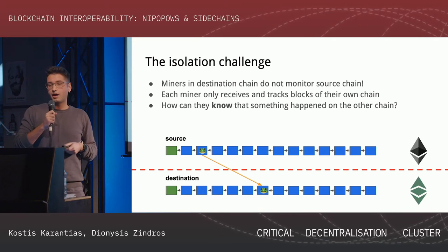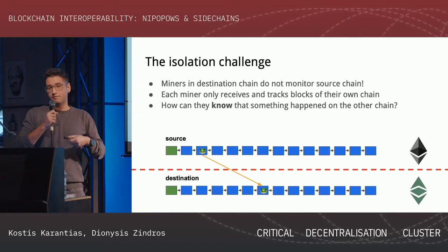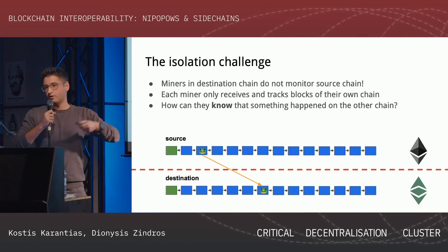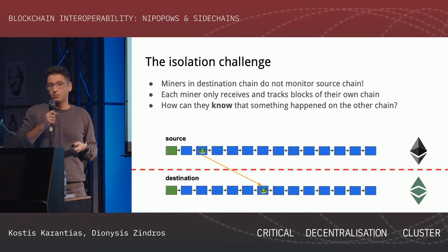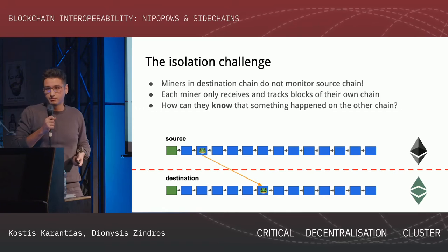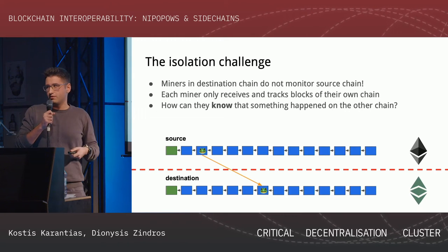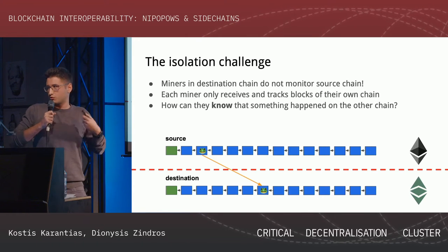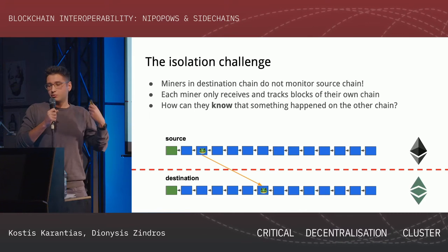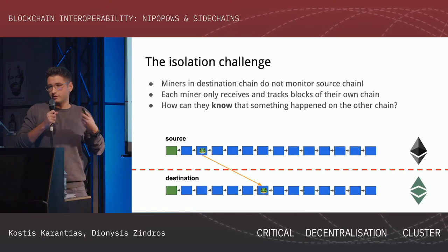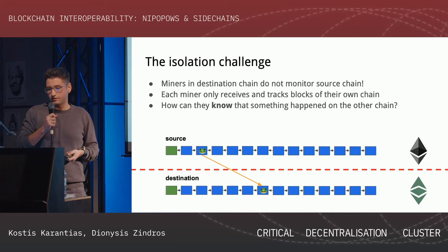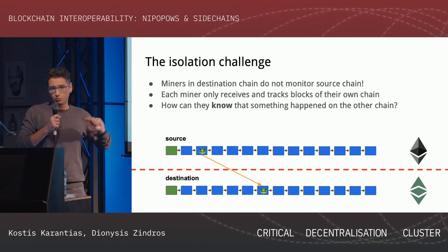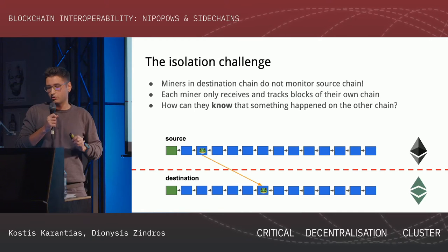An important property is miner isolation: we want to do this without affecting the base layer and without requiring consensus changes. We don't want to place the burden of verifying cross-chain events on miners. The protocol we'll present does have this miner isolation property. Now, we saw what an event is; we'll see how we can prove such an event happened. There are two important pieces: a description of the event itself, and a proof that the event happened. When an event is verified, it gets stored for use by other smart contracts.